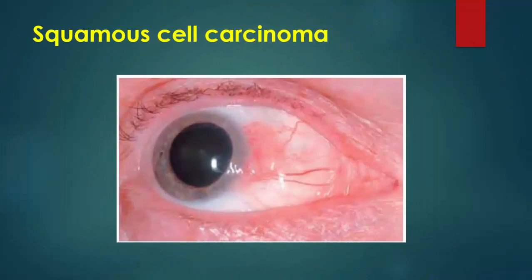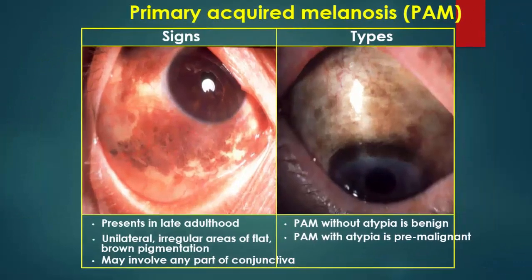Squamous cell carcinoma is the progression of carcinoma in situ. Primary acquired melanosis is a form of conjunctival hyperpigmentation, presented in late adulthood as unilateral, irregular areas of flat brown pigmentation that may involve any part of the conjunctiva. Primary acquired melanosis without atypia is a benign lesion, while primary acquired melanosis with atypia is a pre-malignant lesion.